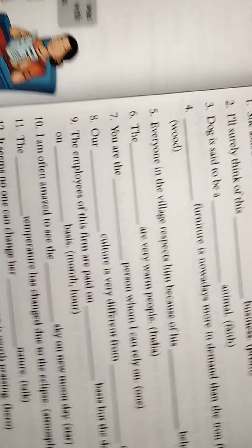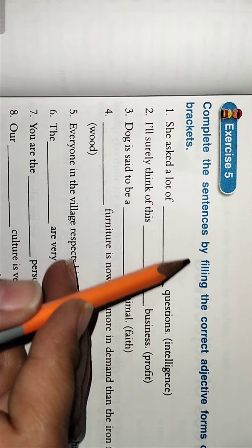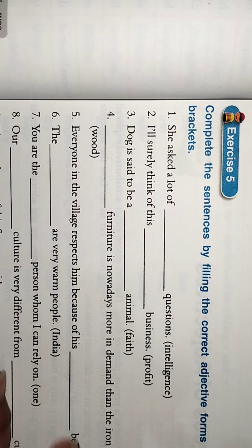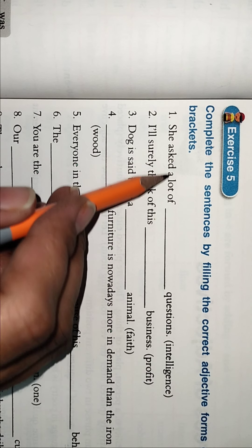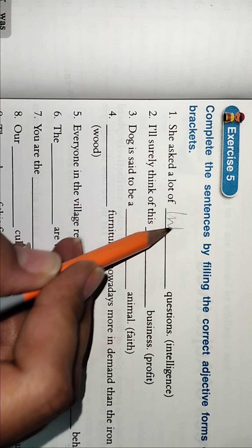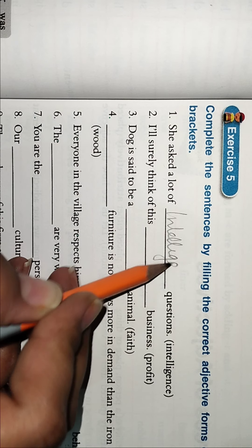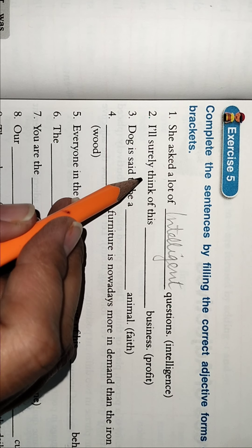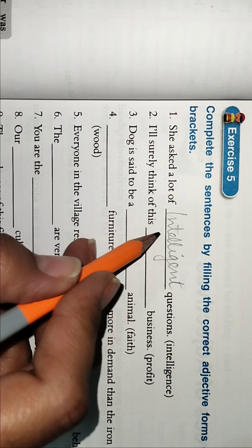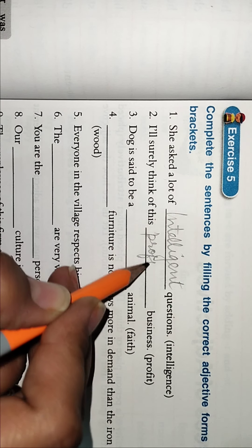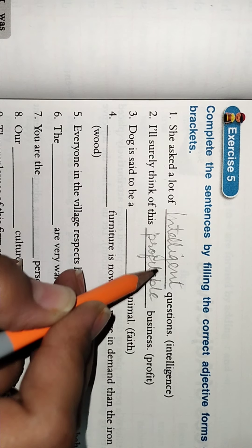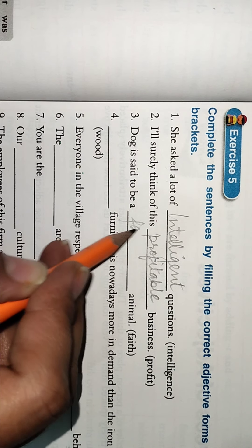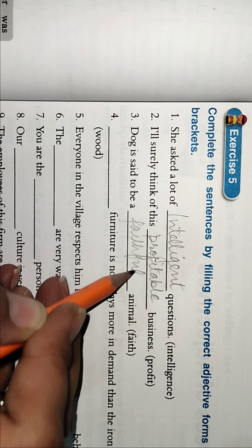So this we have finished this exercise also. Now we come to this - complete the sentences by filling the correct adjective forms of the words given in the bracket. She asked a lot of intelligent questions. I am surely thinking of this profitable business. Dog is said to be a faithful animal. Wooden furniture is nowadays.